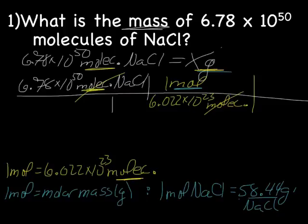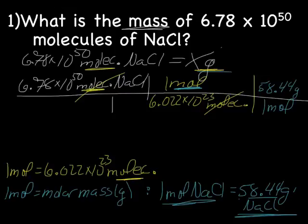Now this and this needs to go into our grid. I'm going to put mole on the bottom because we have mole on the top, and 58.44 grams NaCl on the top. Mole cross out, mole cross out. We've crossed out all of our units, and we're left with grams.